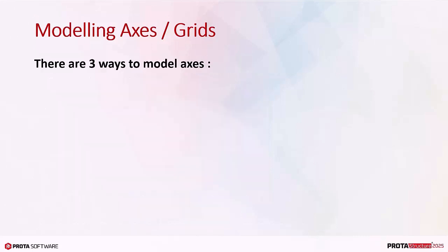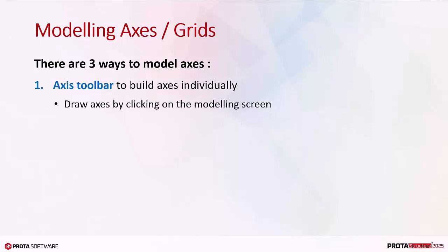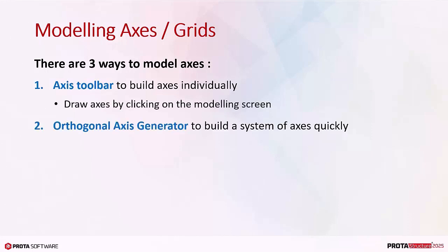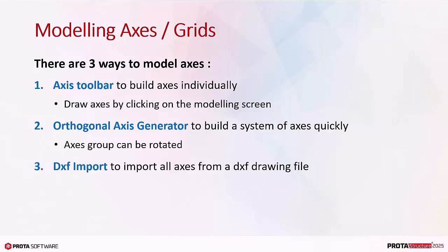There are three ways to model axes. Firstly, you can use the axis tool to build axes individually by drawing on the modeling screen. Secondly, you can use the orthogonal axis generator to build a system of axes quickly, and the axis group can be rotated by keying an angle. Thirdly, you can use the DXF import function to import all axes from a DXF drawing file. This can only be done for a new project where no axes exist.